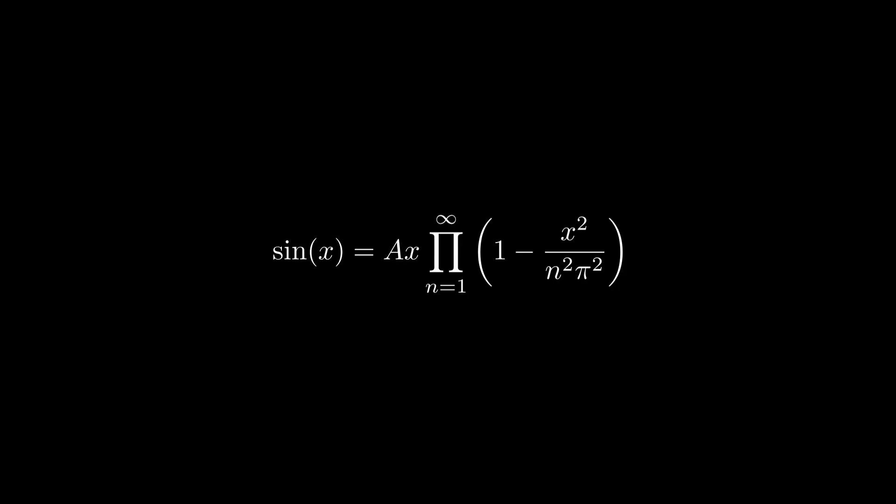Here, a is an unknown constant, and the term x outside the product accounts for the 0 at x equals 0. Our next step is to determine the value of this unknown coefficient, a.